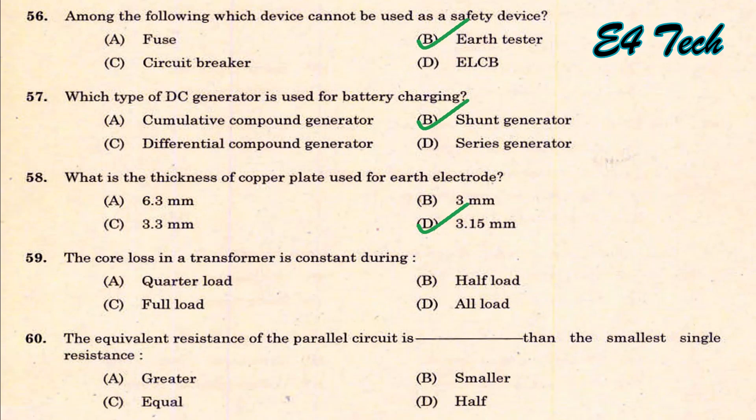The core loss of a transformer is constant during — core loss is a fixed loss.